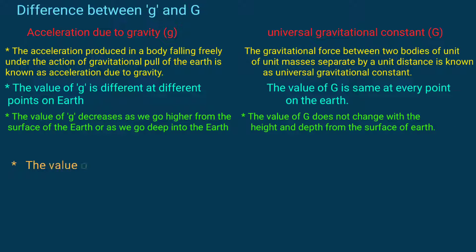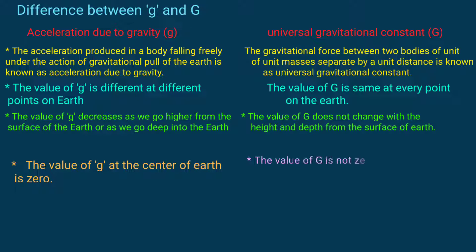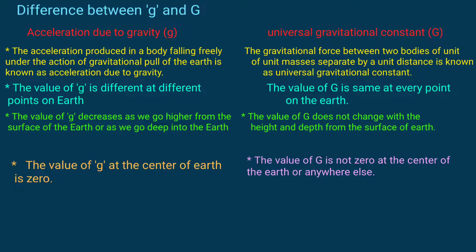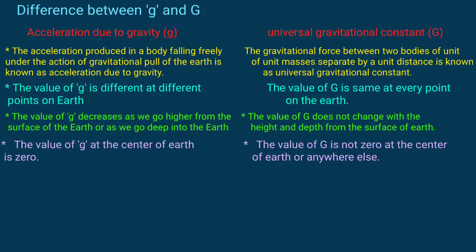The value of g at the center of the earth is zero. The value of G, that is gravitational constant, is not zero at the center of the earth or anywhere else.